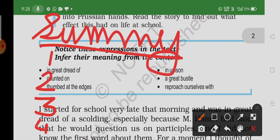The changes he noticed in the school: instead of a noisy classroom, everything was as quiet as Sunday morning. M. Hamel had on his beautiful green coat, frilled shirt, and black silk embroidered cap that he wore on inspection and prize day.